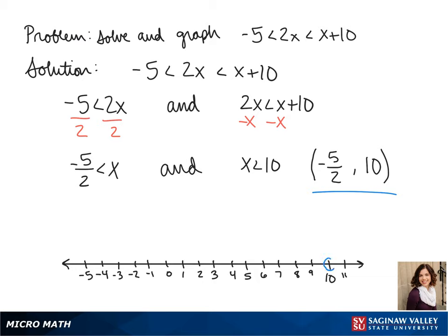So when we go to graph this, both 10 and negative 5 halves get an open circle. And again it's everything that's in between them so that's where our line goes.